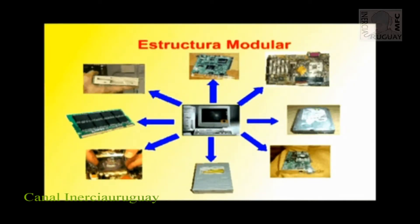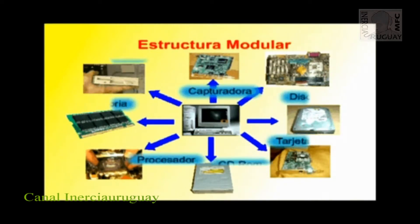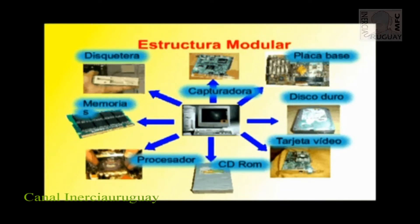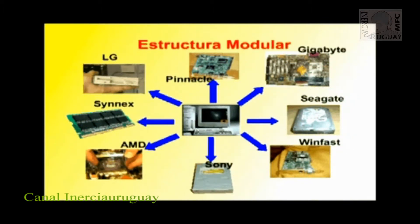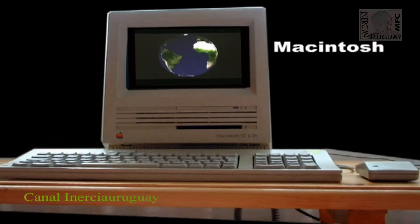Es decir, una máquina formada por componentes o módulos fabricados por diferentes fabricantes e intercambiables entre sí. Si IBM hubiera sido el único fabricante de PCs, no habría aparecido el concepto PC compatible. La compatibilidad se refiere a la capacidad que tiene el PC, en función de su estructura modular, de permitir que los componentes que lo integran hayan podido ser fabricados por otros fabricantes distintos a IBM. Hay ordenadores personales que no son PCs compatibles, tales como los Macintosh de Apple.